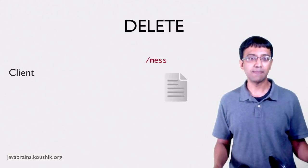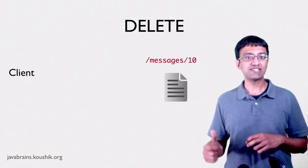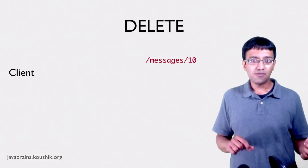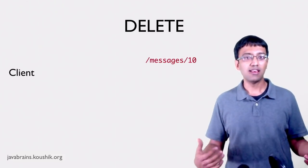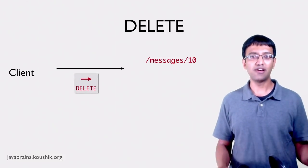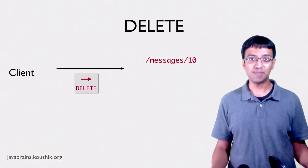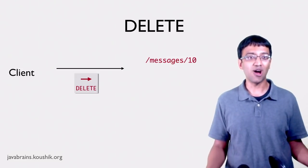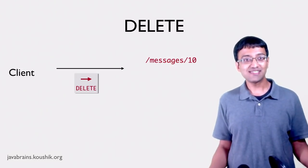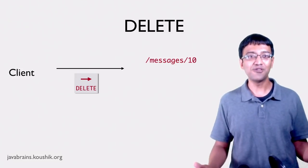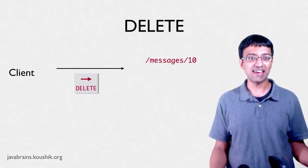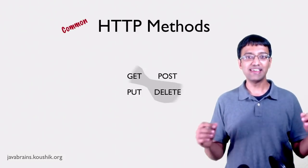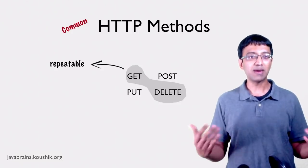Let's start with DELETE. Say you make a DELETE request to /messages/10 — it deletes message ID 10. Now if you make that same call again, message ID 10 is already deleted so nothing happens. While it isn't really required or desirable to make multiple DELETE calls to the same resource, you can see that it's not a problem. If you make the repeated calls by mistake, you would not have unwanted side effects.